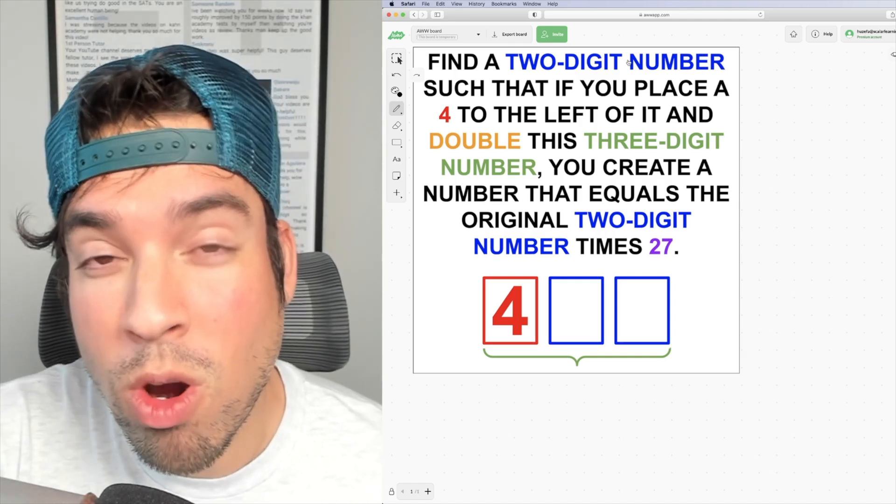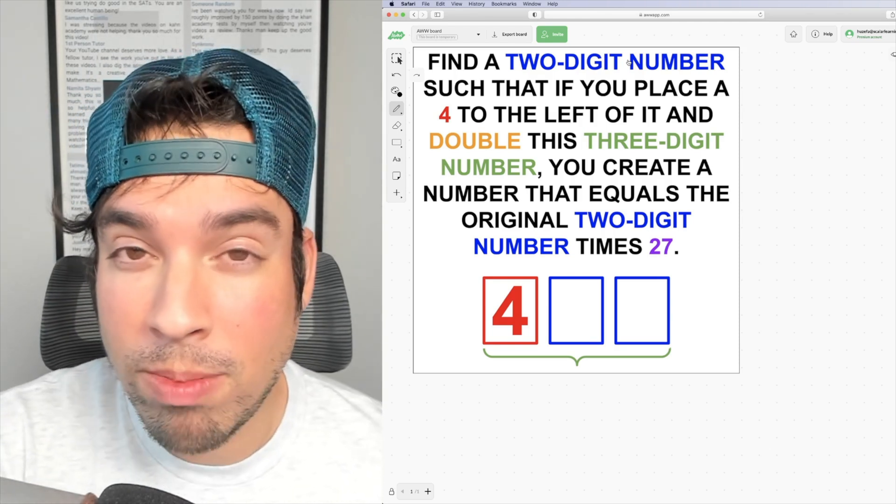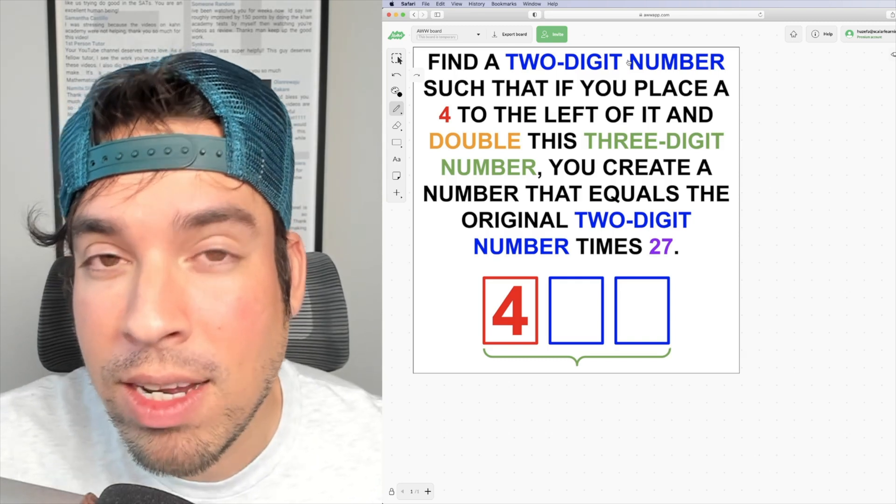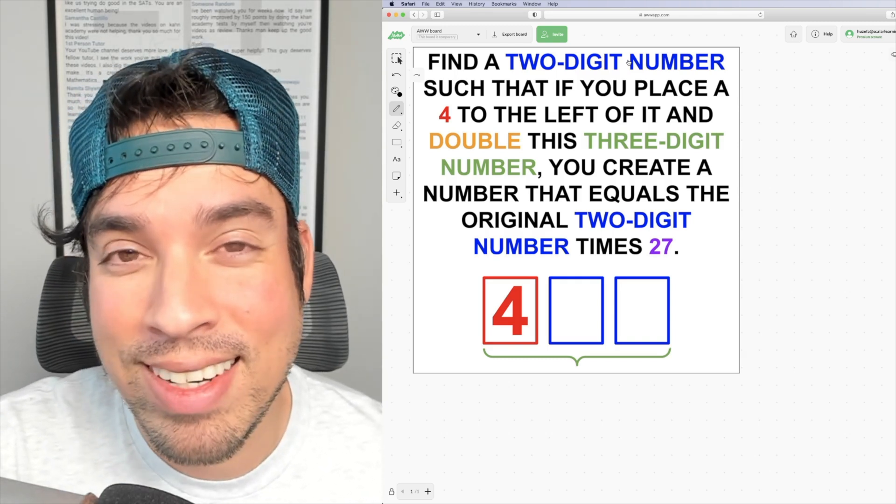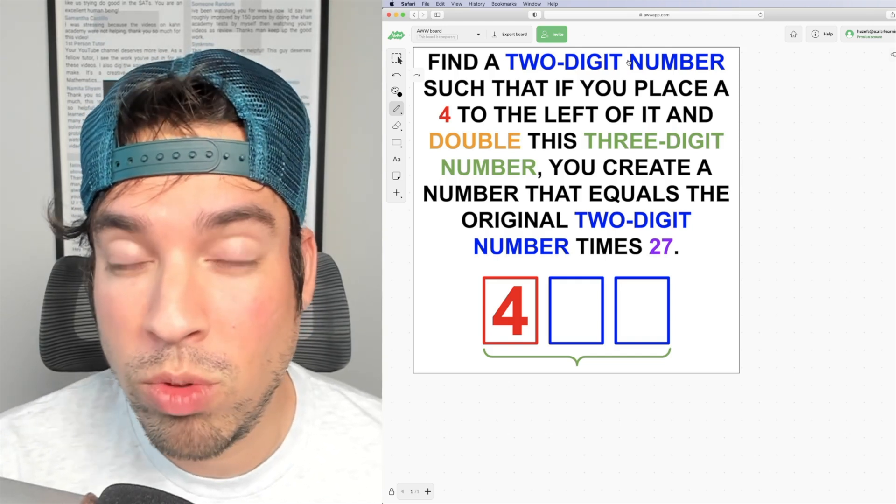Now, since we know we have some number that is 400 and something, we know that the minimum value this can be when you double it is 800. And the maximum, assuming the number is 499, the maximum you could get is 998. So I know that this three digit number when doubled has to be between those two numbers.